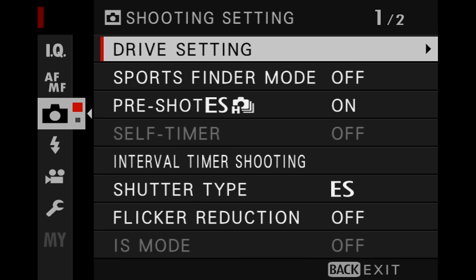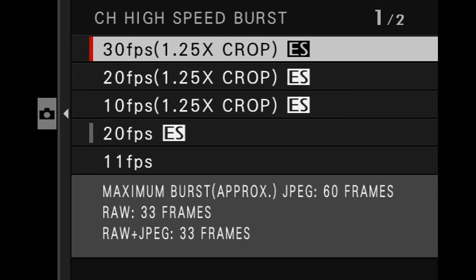you can alter the burst frame rates that you're shooting with, just like when you're shooting in normal burst mode. So for example, I can go into drive setting, high-speed burst, and change this to say 30 frames a second if I want. Don't forget though, you have the 1.25 crop if you do that.